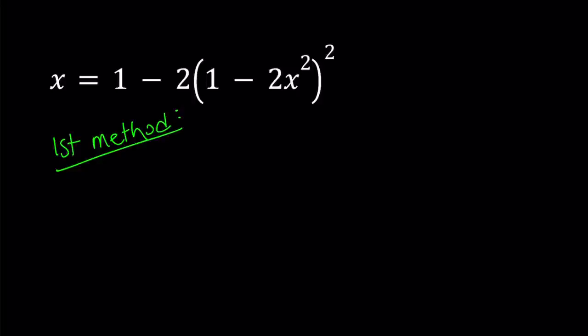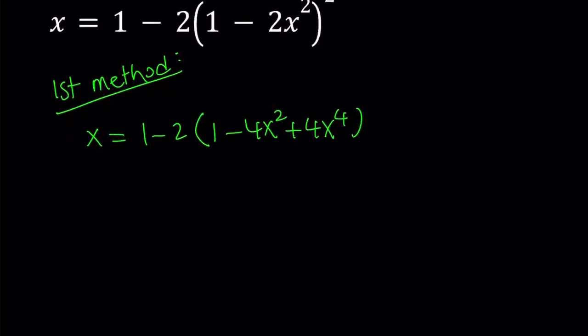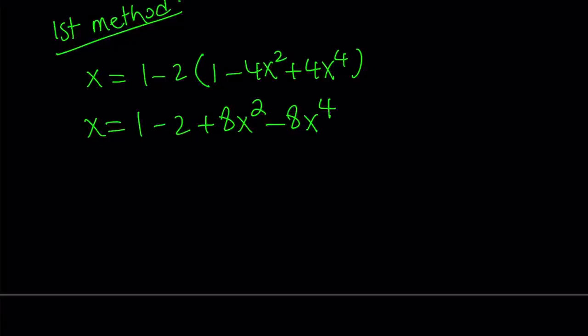For our first method, I'm just going to expand everything and then write this as a quartic equation. If you square the expression inside the parentheses, you get 1 minus 4x squared plus 4x to the fourth power. Let's go ahead and distribute, and then put everything on the same side.